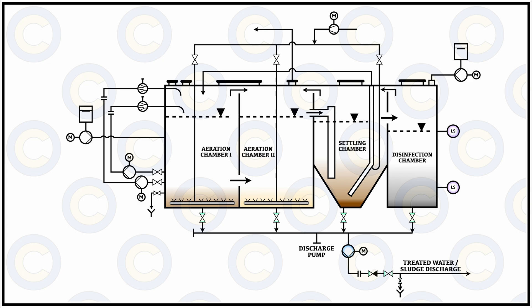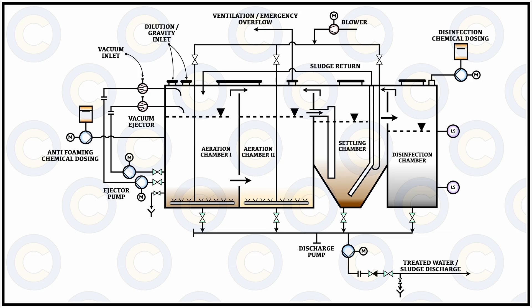Except for the aeration chamber, settling chamber, and disinfection chamber, the other parts of a sewage treatment system are the chemical dosing tank, the blower, other pipings or mountings such as the inlet and sludge return line, the overflow line, the vacuum pump, ejector pump, and the anti-foaming dosing inlet or dosing tank.